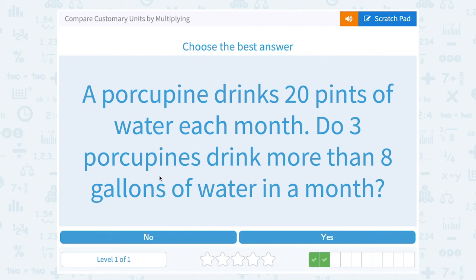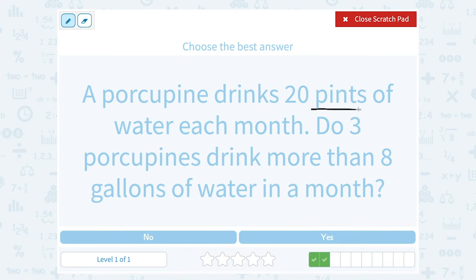A porcupine drinks 20 pints of water each month. Do 3 porcupines drink more than 8 gallons of water in a month? Alright well let's take a look. One of these is in pints and one of these is in gallons.